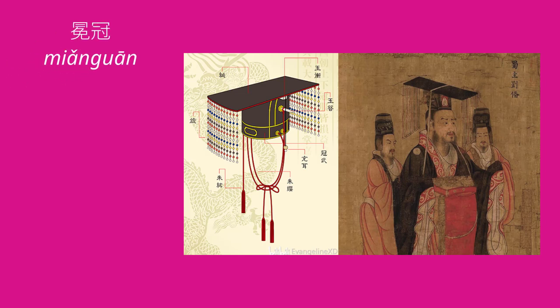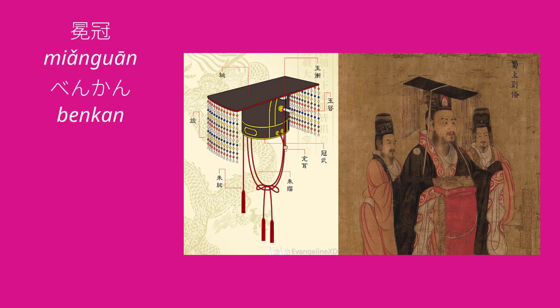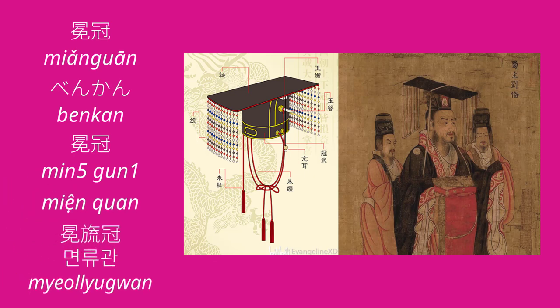It's called miangguan in Mandarin, bengkan in Japanese, mingun in Cantonese, and miangguan in Vietnamese. In Korean, they add another character in the middle to make miangguan.